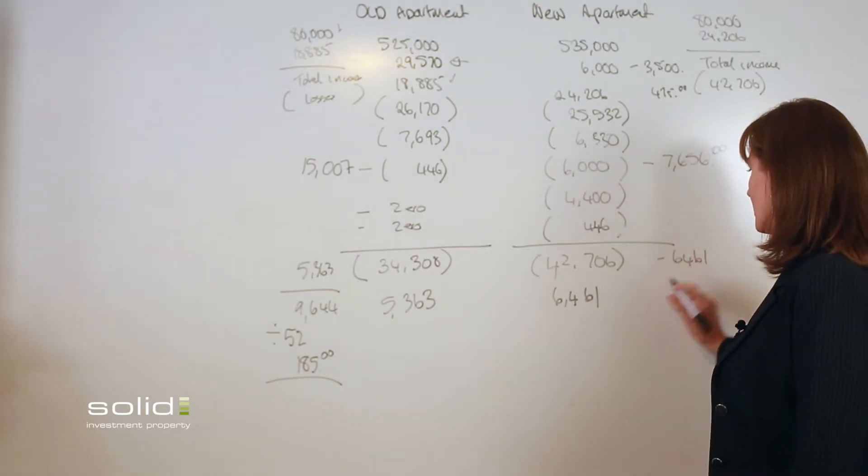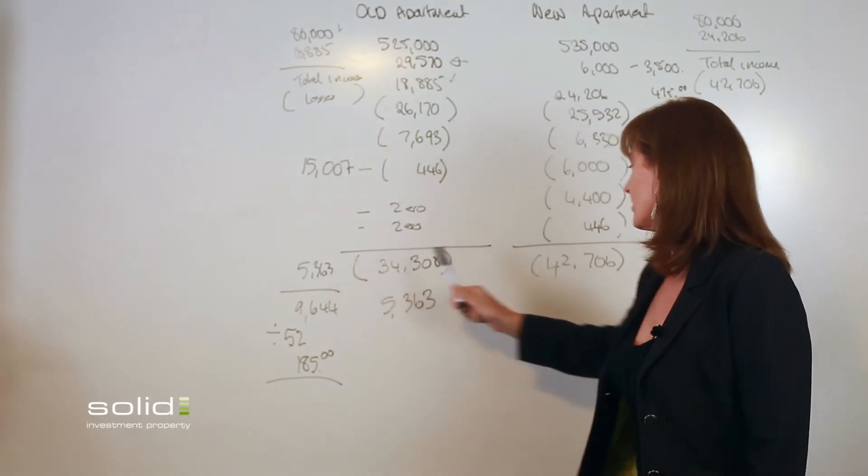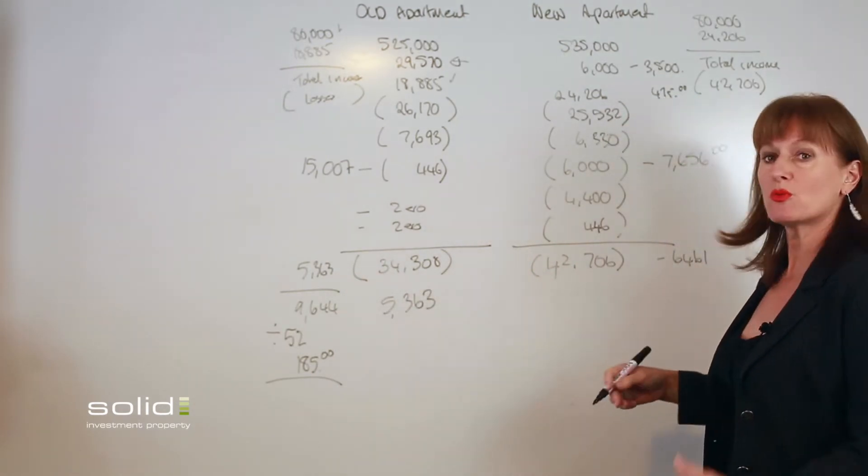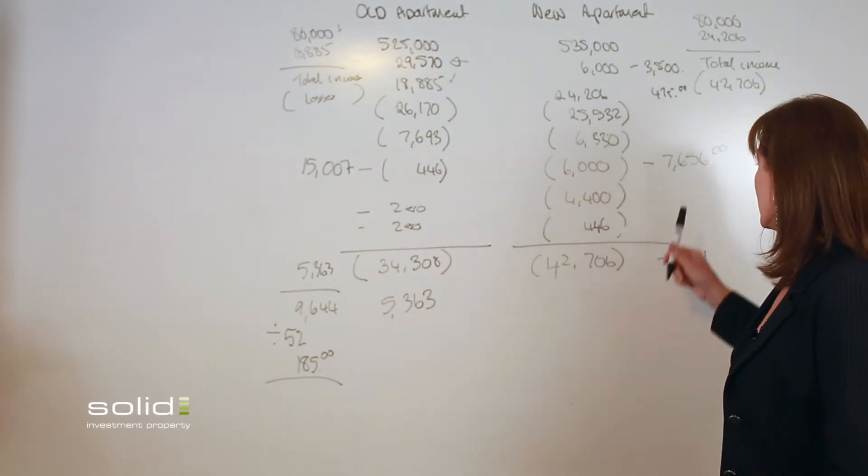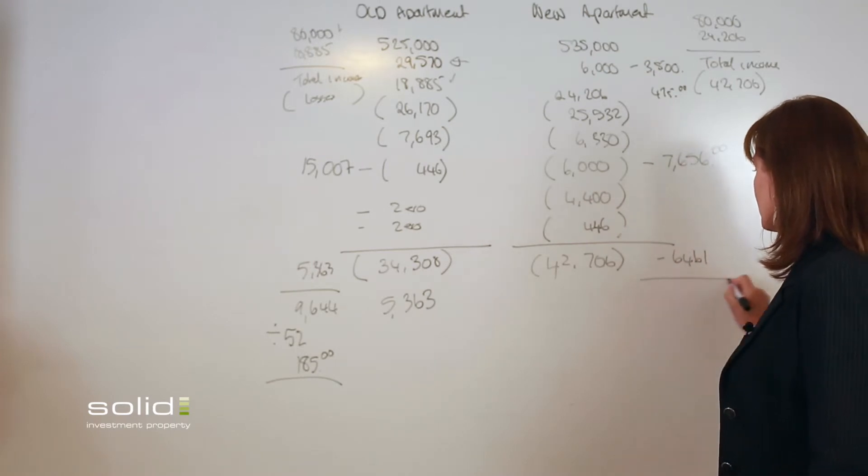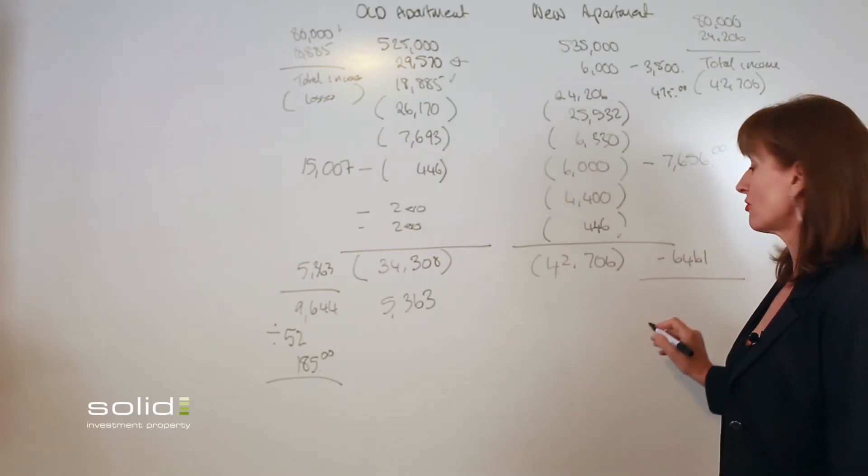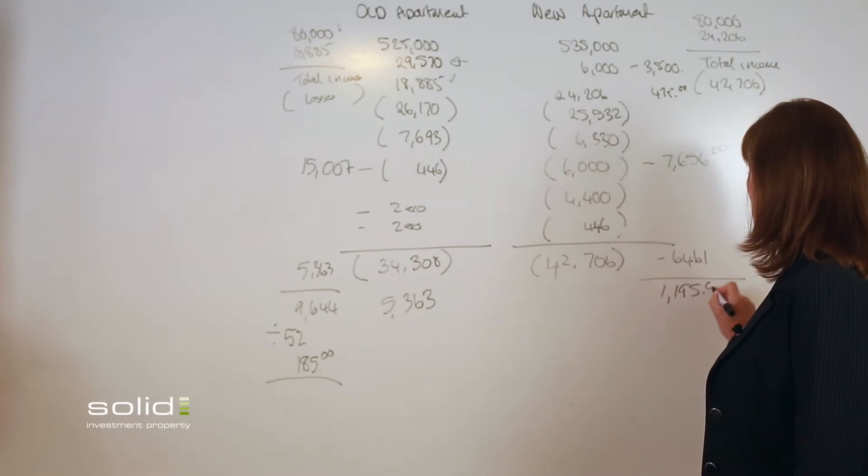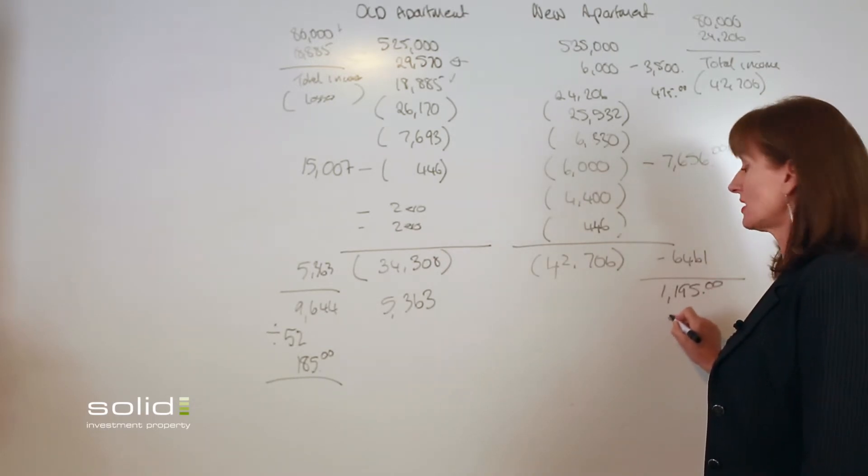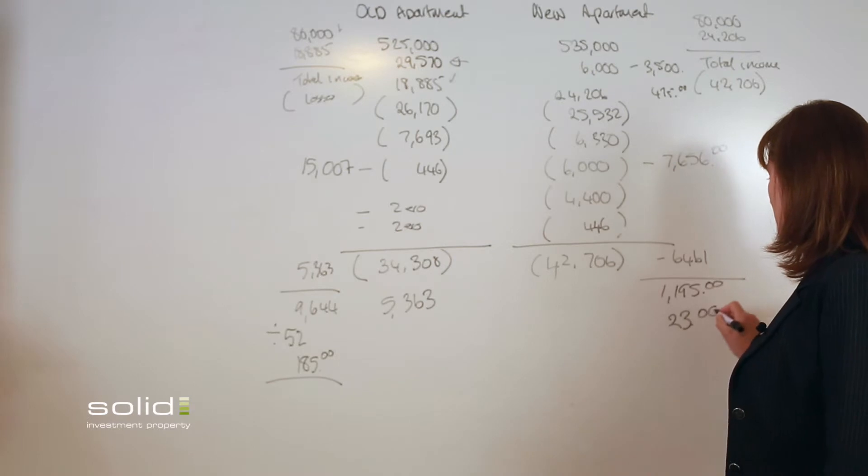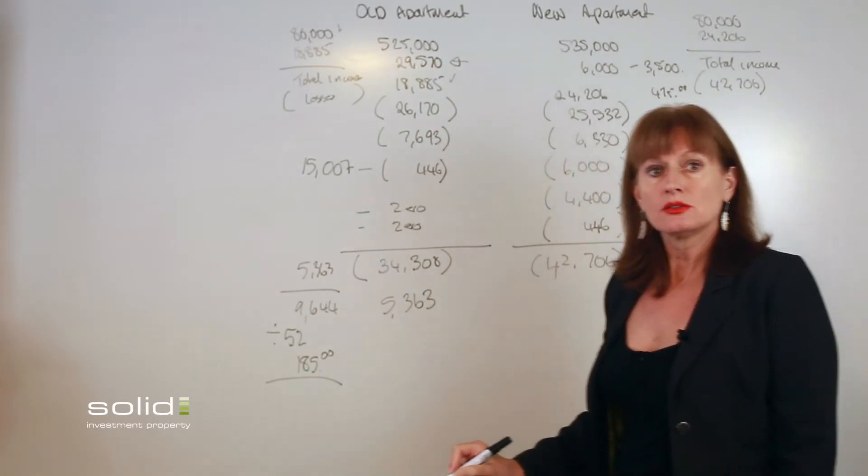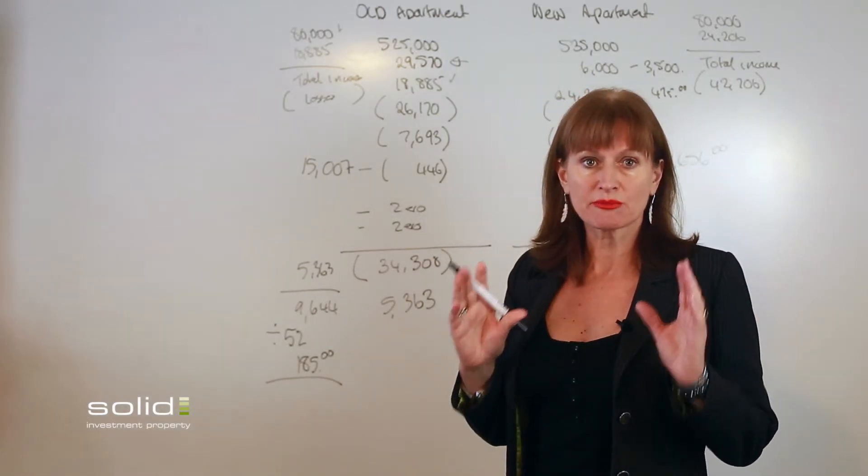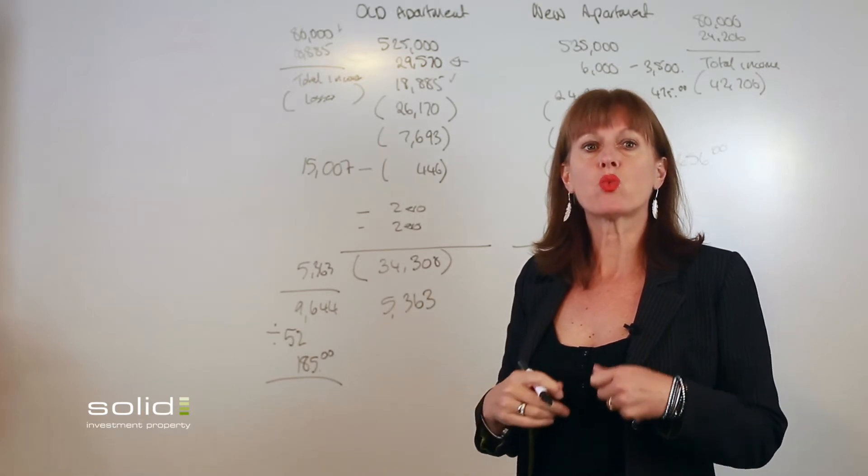So over here we've got a refund of $5,363, but here we've got a refund of $6,461. The comparative refunds are slightly higher here, but what happens now is when we deduct this from this, we are actually out of pocket $1,195 a year, which is basically $23 a week.